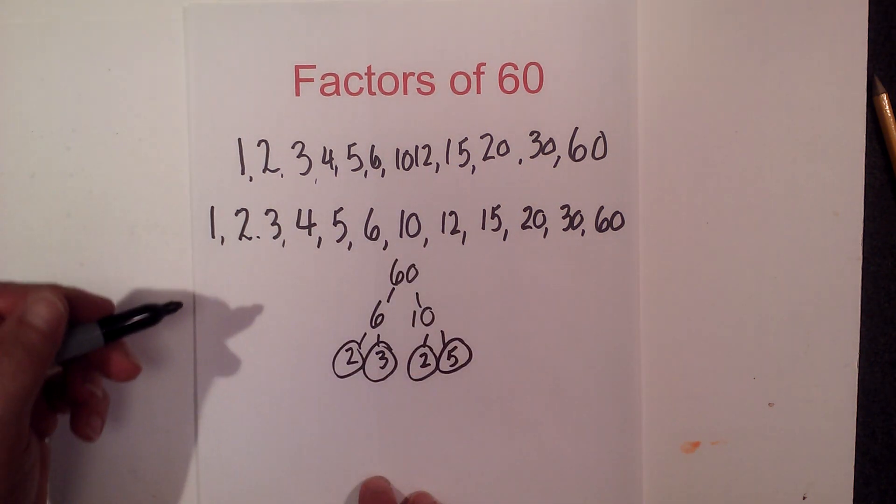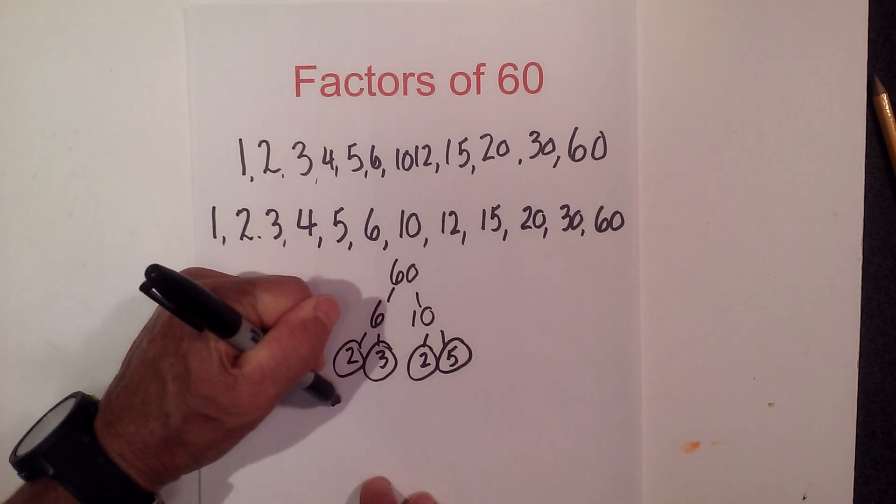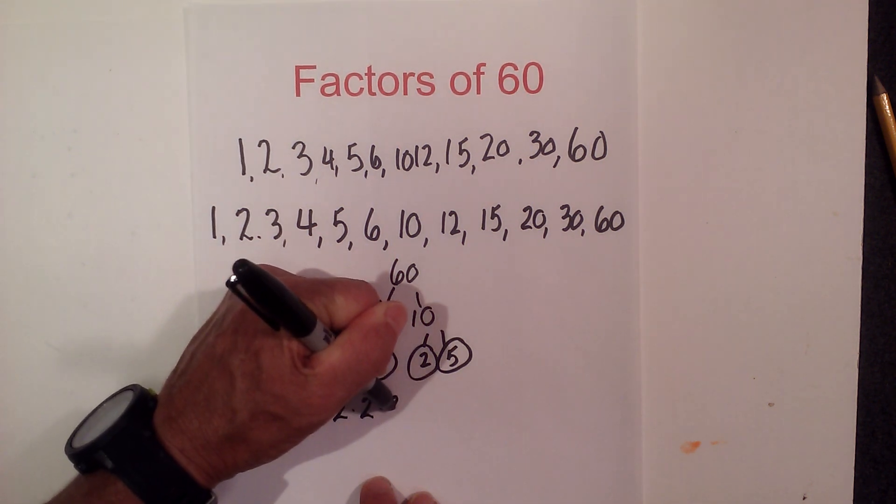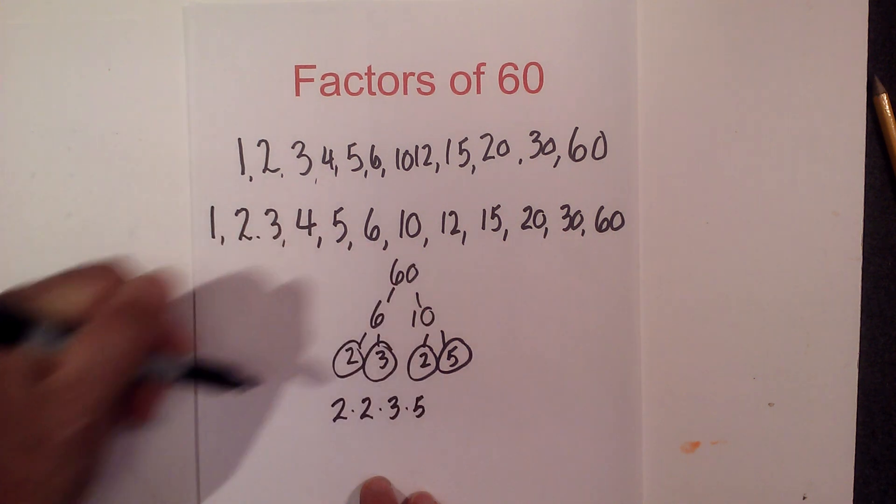So the prime factors of 60 are 2 times 2 times 3 times 5.